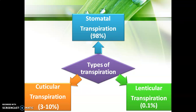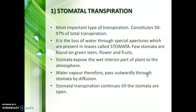Stomatal transpiration occurs through the stomata, which are present in the leaves, so stomatal transpiration occurs through the leaves. Cuticular transpiration, as the name suggests, occurs through the cuticle or epidermal cells of the leaves. Lenticular transpiration occurs through the lenticels present in the plant bark or plant stem. We will discuss these three types one by one.